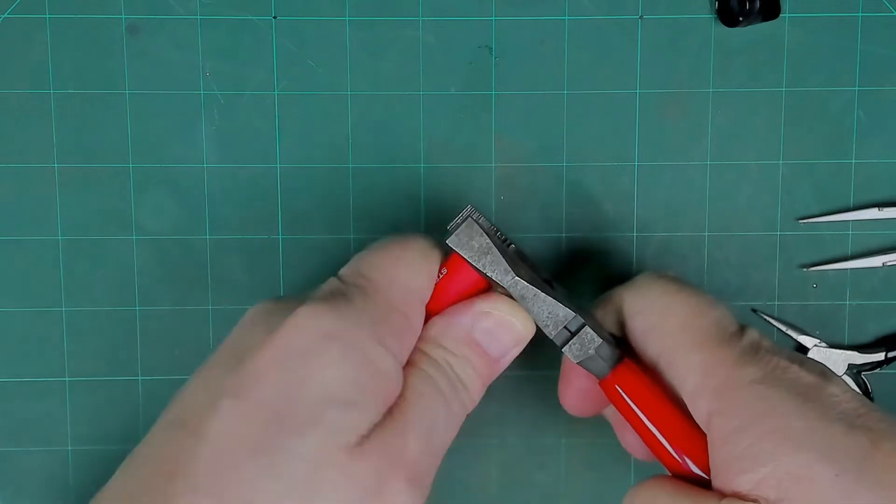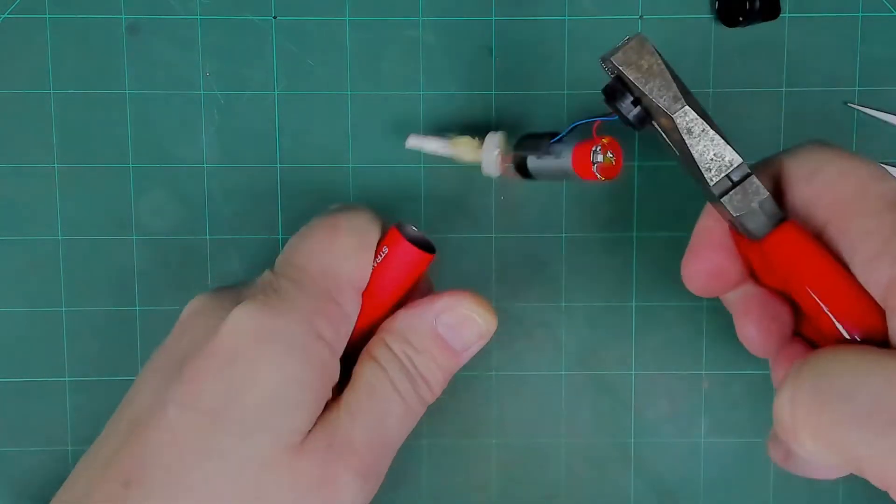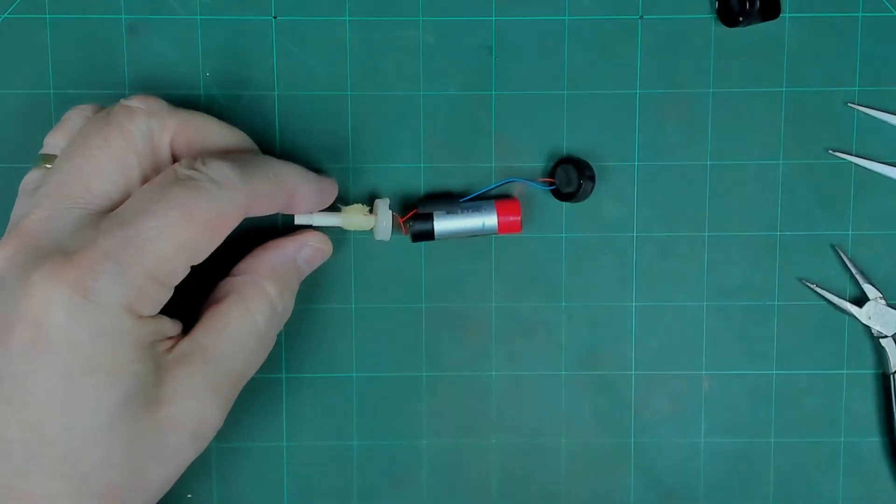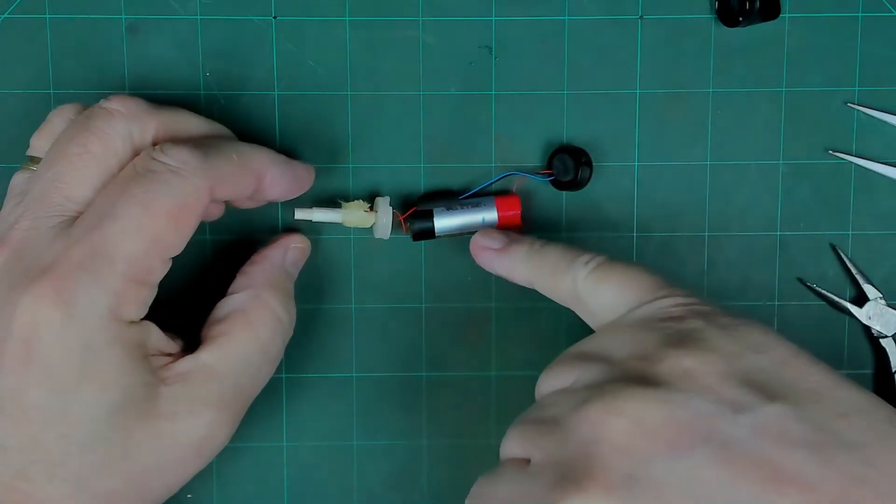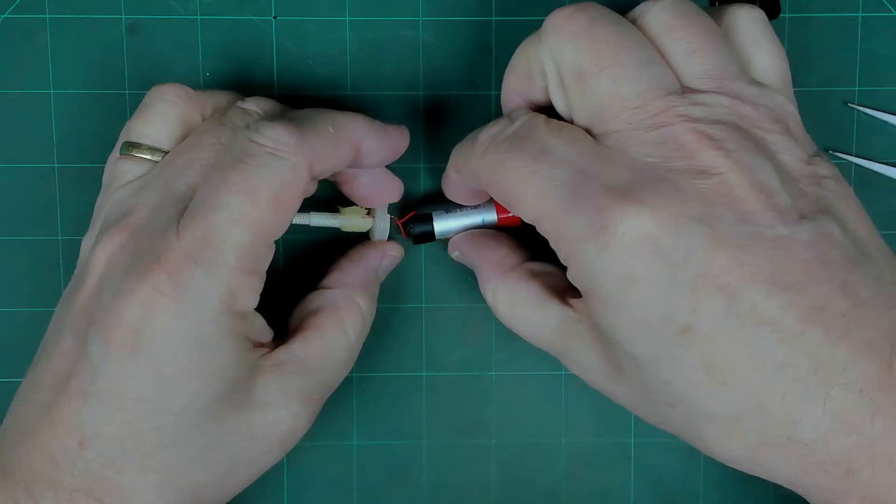Whatever you do, do not squeeze the tube because you can damage the battery, and that could catch fire if it's damaged. Just grab hold of the end, twist it, pulling it gently, and out it comes. There we have the sensor, the battery, and the heating element.